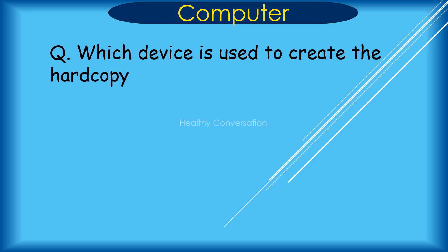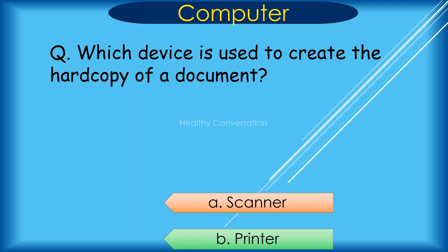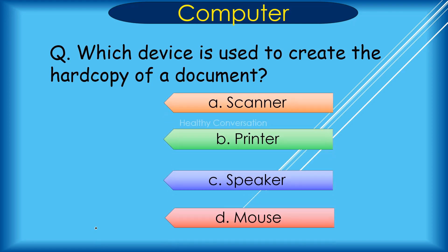Question: Which device is used to create a hard copy of a document? A. Scanner, B. Printer, C. Speaker, D. Mouse. Correct answer is B. Printer.